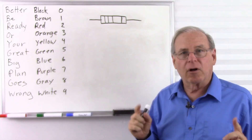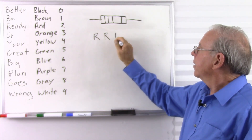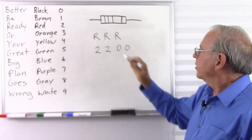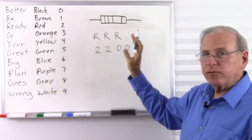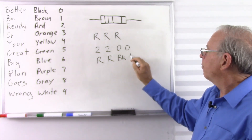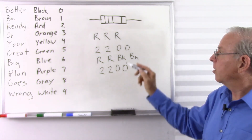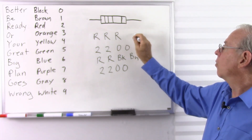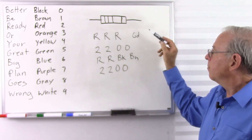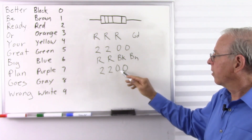Let's come up with some numbers for practice. Red, red, red: that's two, two, and two zeros — 2,200 ohms. For a four-color precision resistor, red, red, red, black, brown: that's two, two, two, zero, and one zero — so 2,220 ohms. Notice those are actually the same resistance expressed with different precision.